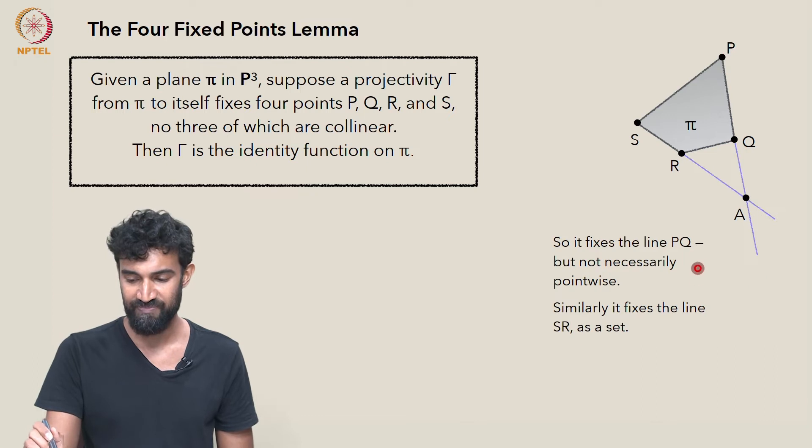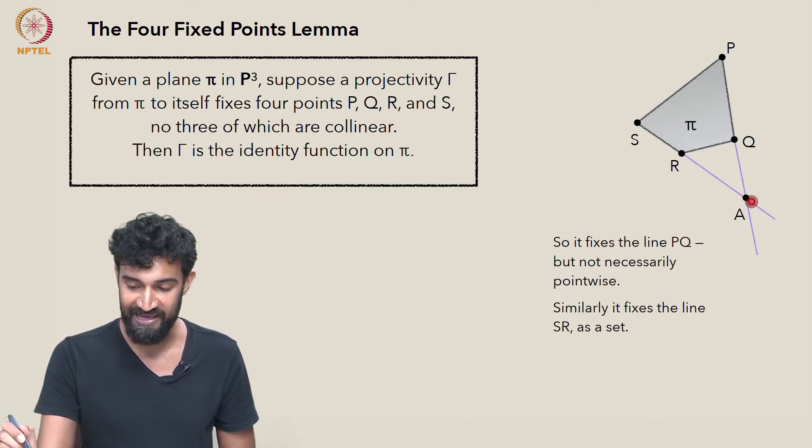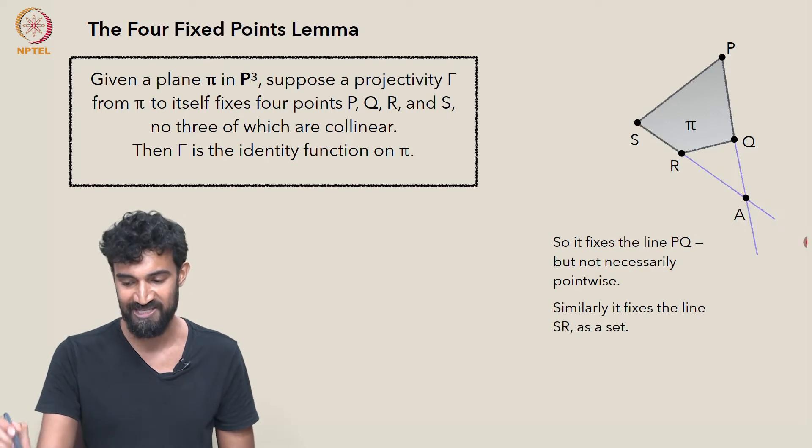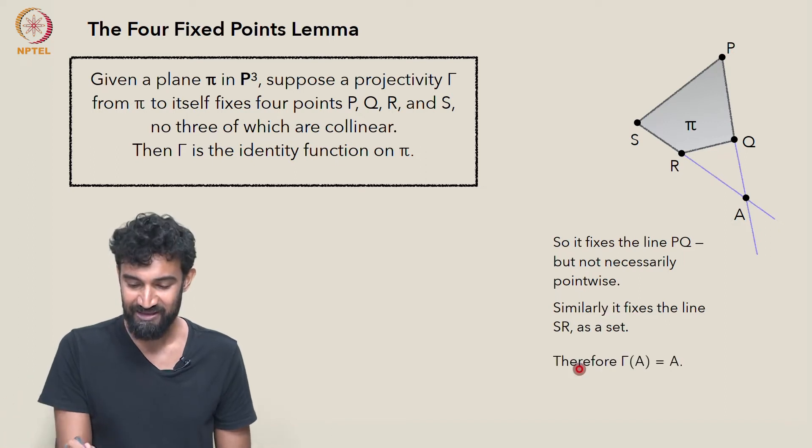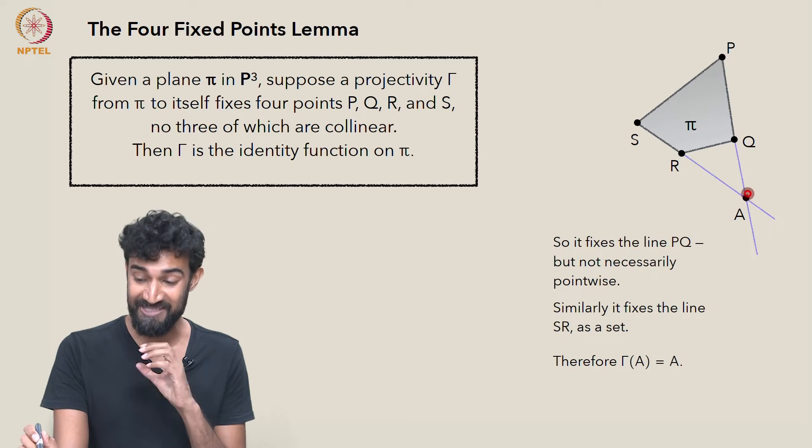A is lying in this line, so the image of A, γ of A, will also lie in this line. A lies in this line, so γ of A will also lie in this line. So γ of A lies in both lines, meaning that γ of A is equal to A.